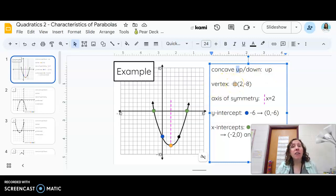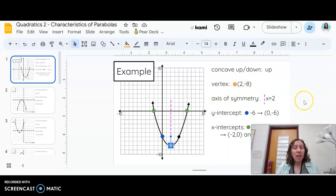Vertex is the very tip of the U, whether or not it's right side up or upside down. So right here, this yellow dot is the vertex. The coordinates of that are two, negative eight,